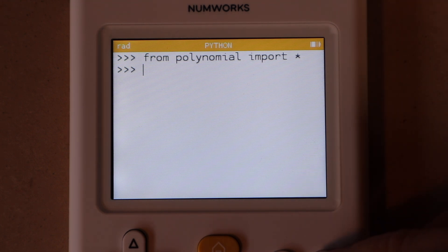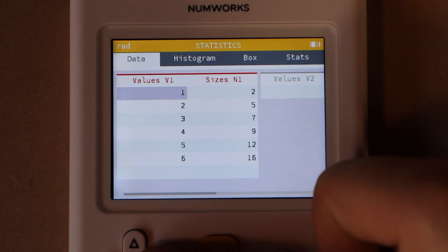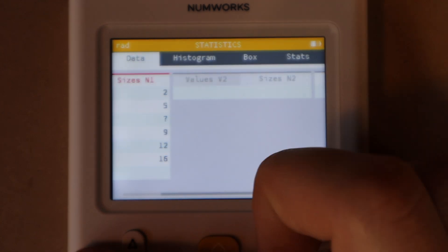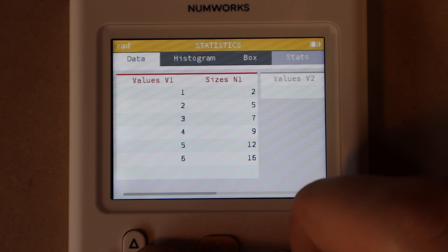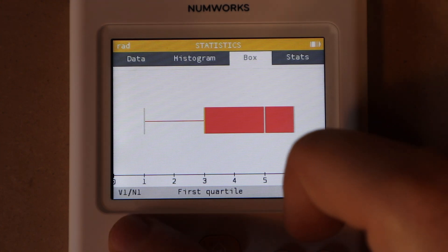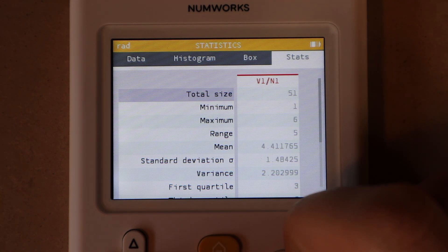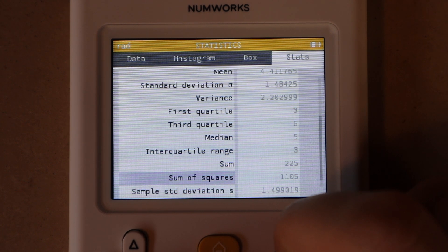This is the app that they call statistics. You can see I've entered some data here in one of these simple tables, and then you can go up to any of these tabs. Here's a simple histogram, and then you also get a box plot. If you go all the way over to the right, you get all of your typical statistical values: mean, standard deviation, variance, and quite a bit more.